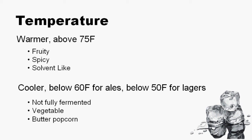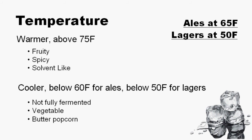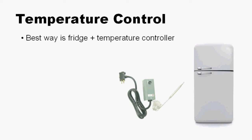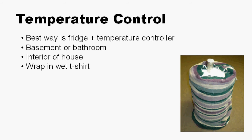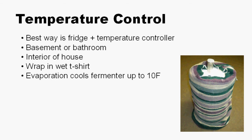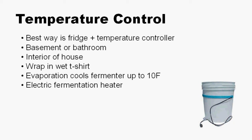In the most general terms, ales should be fermented at 65 degrees Fahrenheit, and lagers should be fermented at 50 degrees Fahrenheit. The best way to control temperature is with a refrigerator equipped with a temperature controller, though this is expensive and a bit more advanced. Always place your fermenter in a room that does not have wild swings in temperature, such as a basement or bathroom. An easy way to keep fermentation cool is to wrap your fermenter in a wet old t-shirt or towel — as the water evaporates, it cools the fermenter. This can drop the temperature by at most 10 degrees Fahrenheit. If your fermentation is too cool, the best way to warm it up is with an electric fermentation heater, such as one of these pictured here, or simply move the fermenter to a warmer spot.